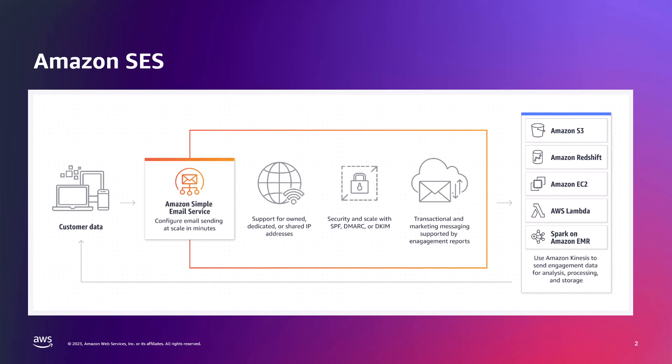Amazon SES is a cloud email service provider that can integrate into any application for bulk email sending. Senders from small startups to large enterprise accounts can use SES to reach their customers, but getting those messages to a customer inbox can be tricky. Understanding deliverability best practices and what mailbox providers expect from bulk senders is the key to getting messages to a customer's inbox.